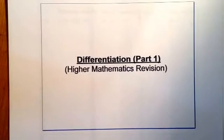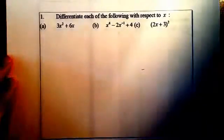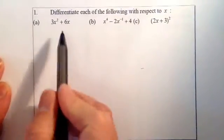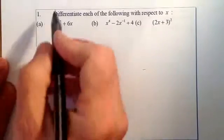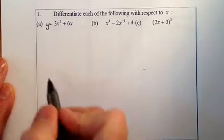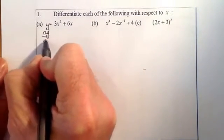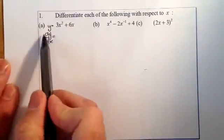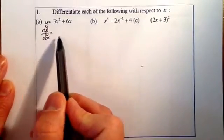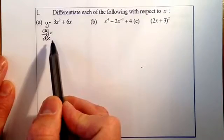Let's get started — this is the first of six videos. If you haven't got this worksheet, freeze it and try the questions yourself before checking the solutions. I'm going to differentiate each expression with respect to x. Starting with y = 3x² + 6x, differentiating gives dy/dx, which is our gradient formula — one of the key reasons we differentiate.